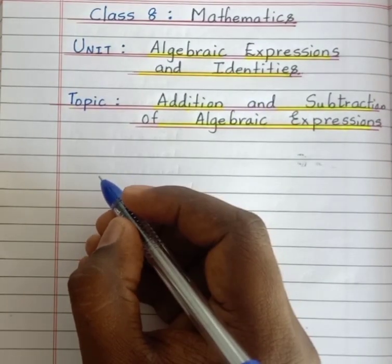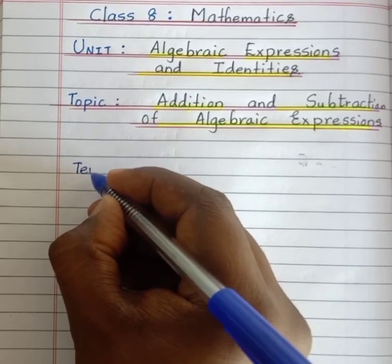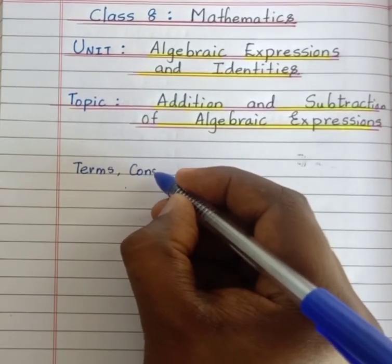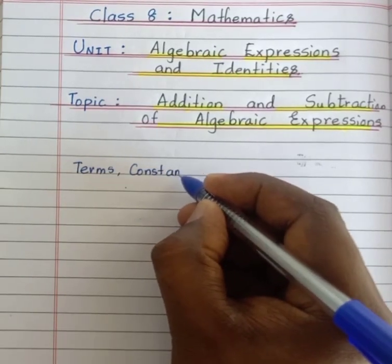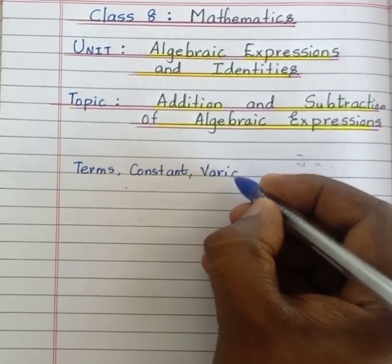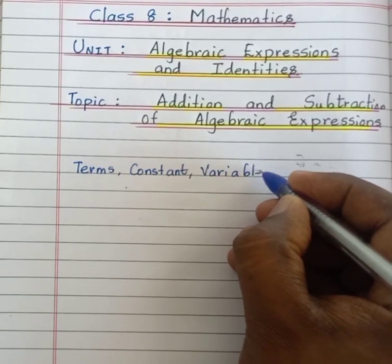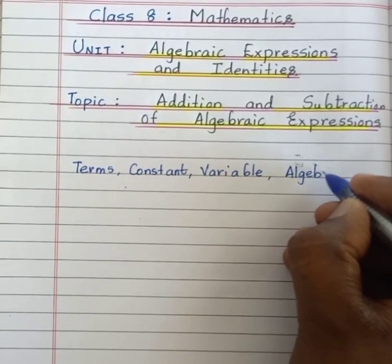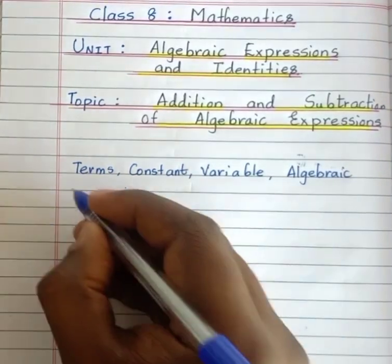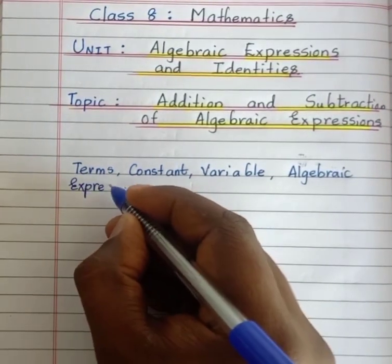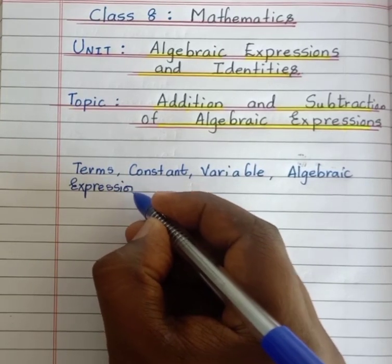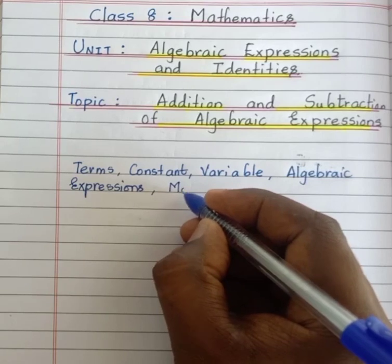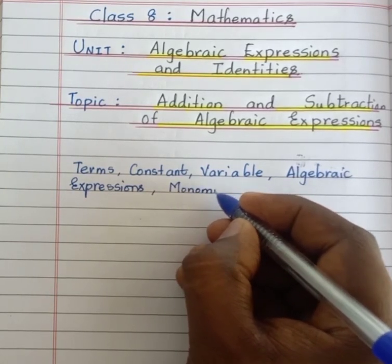In the previous video, we have learnt about constant, variable, terms, algebraic expressions, monomial, binomial, trinomial, and polynomials. Then we have learnt about like terms and unlike terms. Hopefully, you have understood all these concepts.